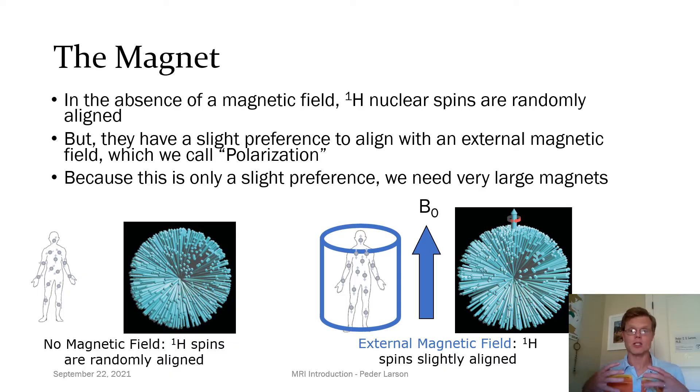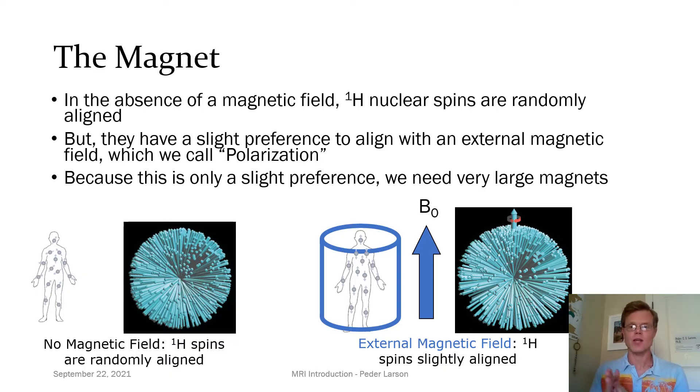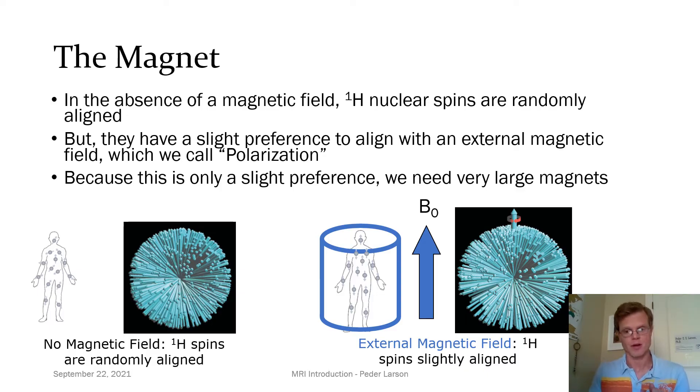The reason we need such large magnets in MRIs is that this preference for alignment with the external magnetic field is only a slight preference.